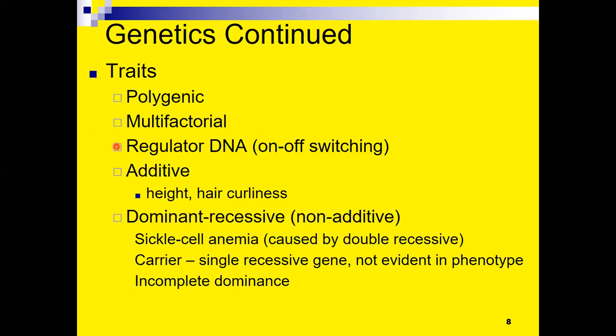When it comes to other bits of DNA, some was once called 'junk DNA' because scientists didn't know what it did — they thought it was left over from some evolutionary process. But it turned out this DNA was actually regulating other genes, and so became known as regulator DNA. This genetic material regulates when a particular gene switches on and when it switches off.